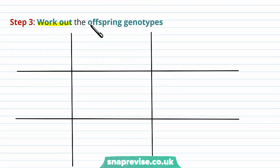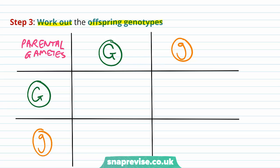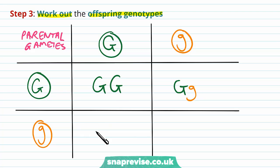You then work out the new F2 offspring genotypes. Put the parental gametes in — large G and little g for the first parent, and large G and little g for the second, because they were both heterozygous. Crossing rows and columns: large G with large G gives double large G; large G with little g gives large G, little g; this combination again gives G, little g; and the two little g gametes fuse to form little g, little g.